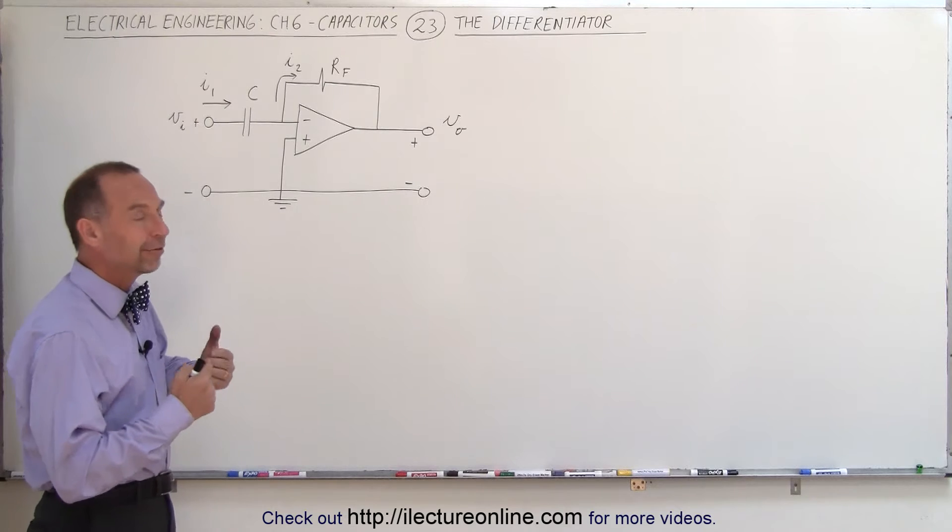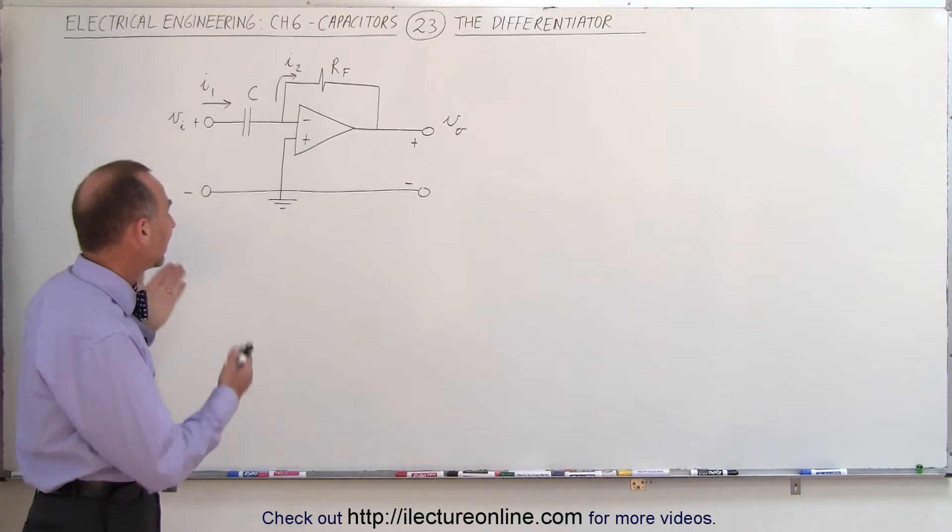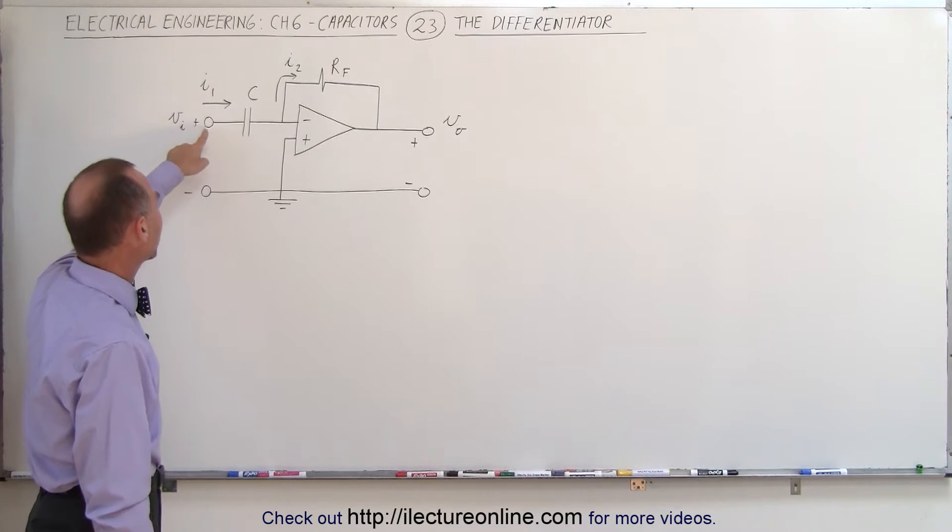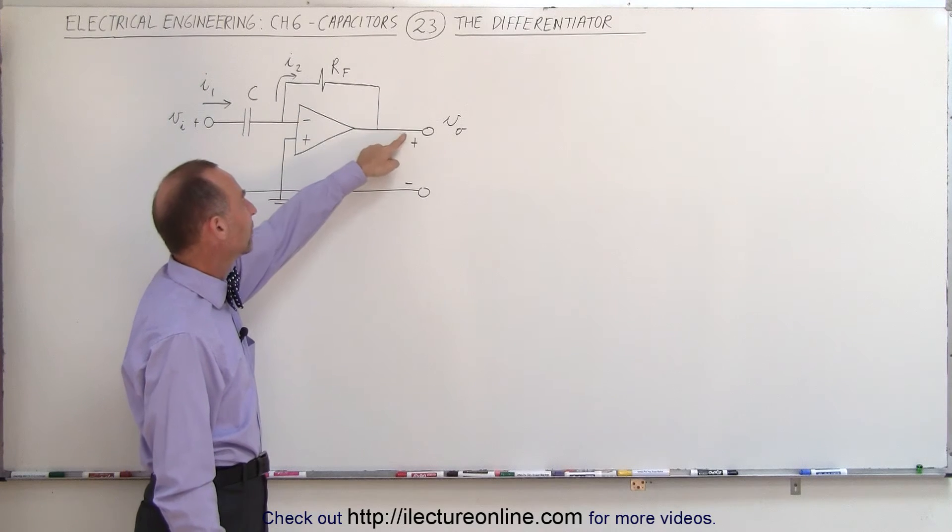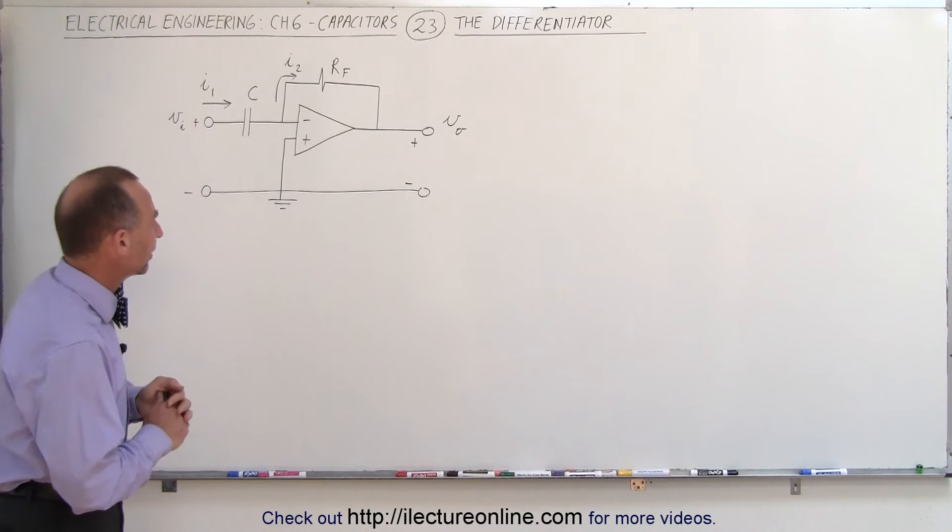In other words, we're trying to find the circuit where the output voltage is the derivative of the input voltage. And this is how we can do that, by placing the capacitor on the input voltage and we still have the feedback resistor feeding back from the output voltage down here to the negative input of the operational amplifier.